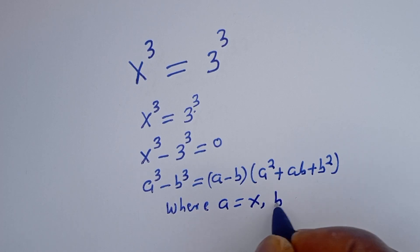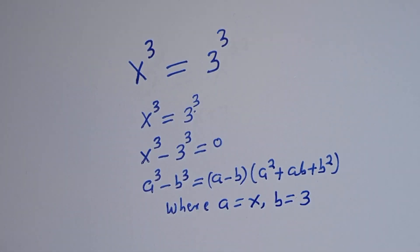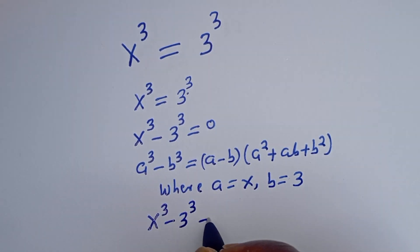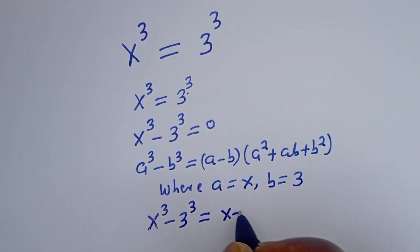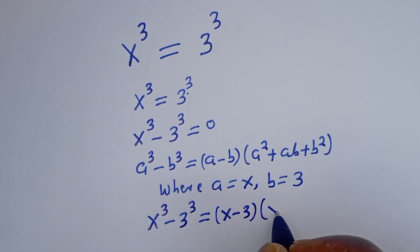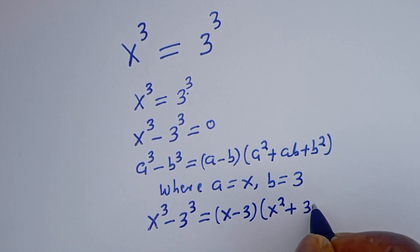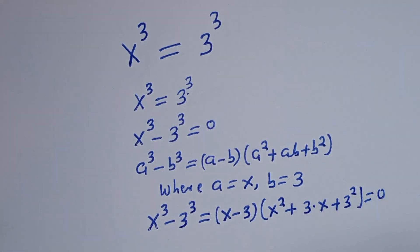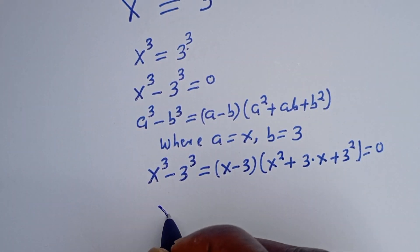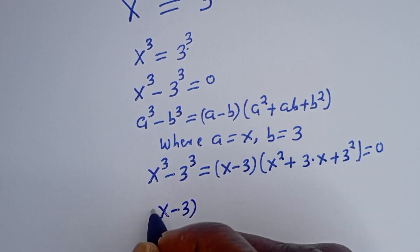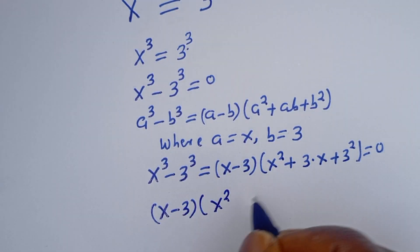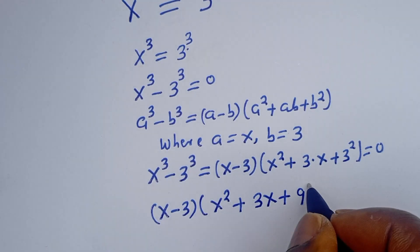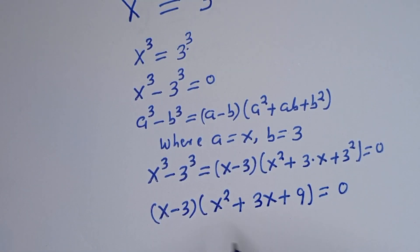Where a is equal to s and b is equal to 3. So s³ minus 3³ is equal to (s minus 3)(s² plus 3s plus 3²), which is (s minus 3)(s² plus 3s + 9) = 0.